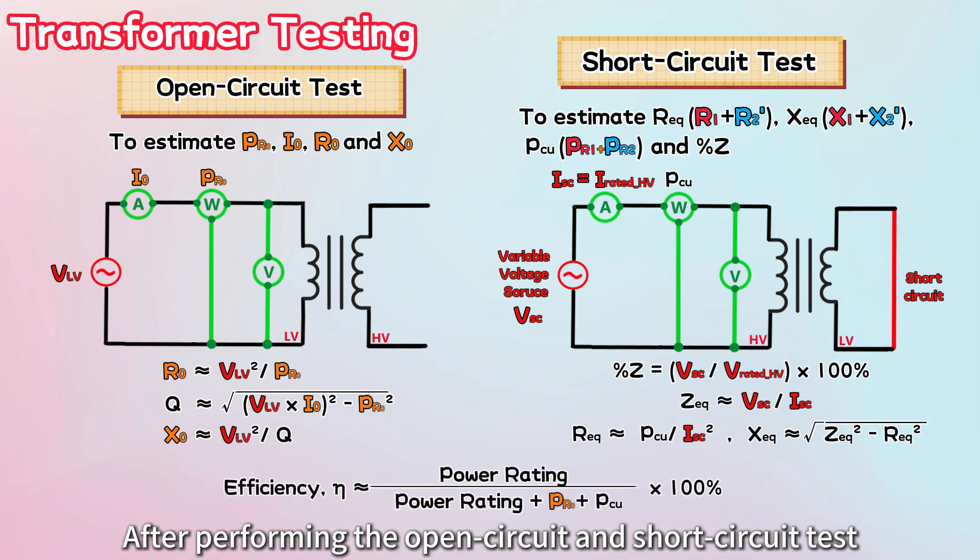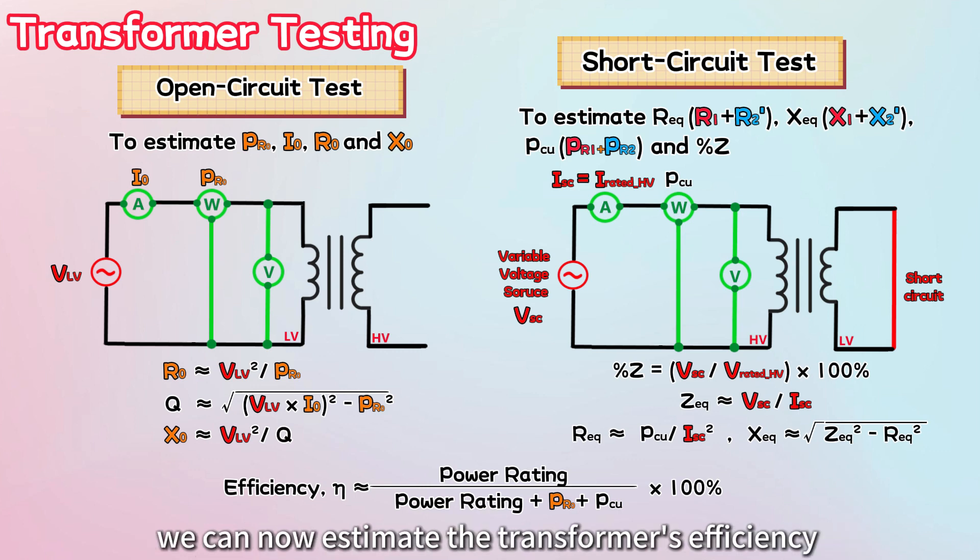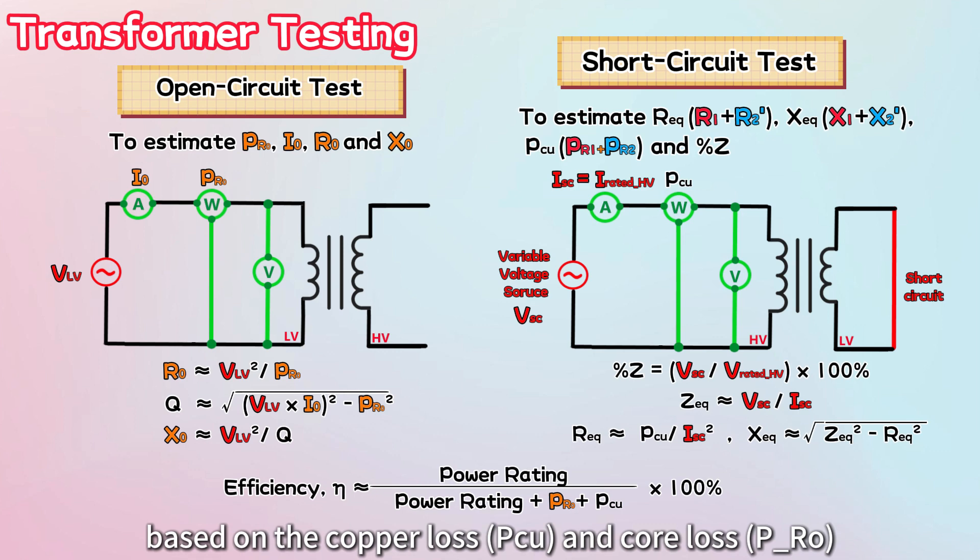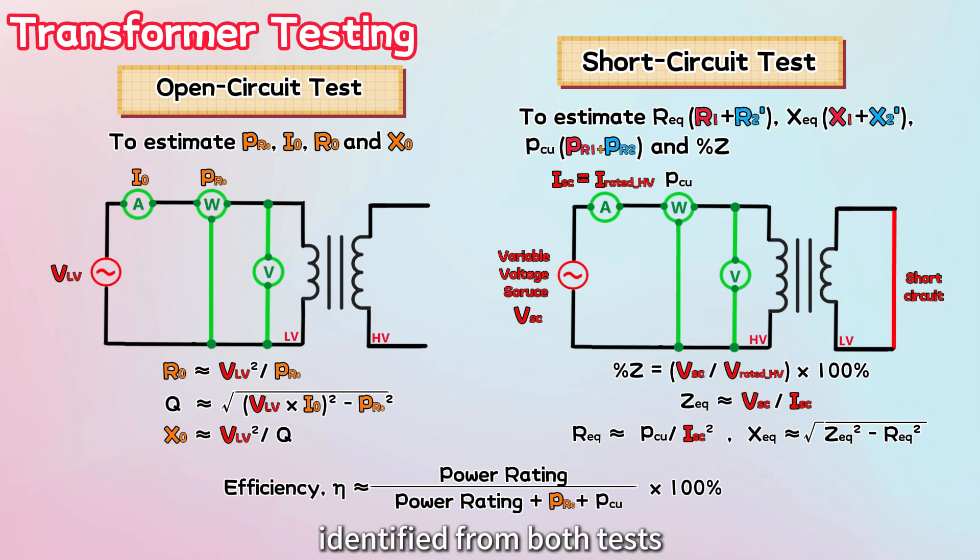After performing the open-circuit and short-circuit tests, we can now estimate the transformer's efficiency based on the copper loss and core loss identified from both tests. In summary, performing transformer tests to obtain these critical values gives us a thorough understanding of the transformer's performance and ensures its reliability.